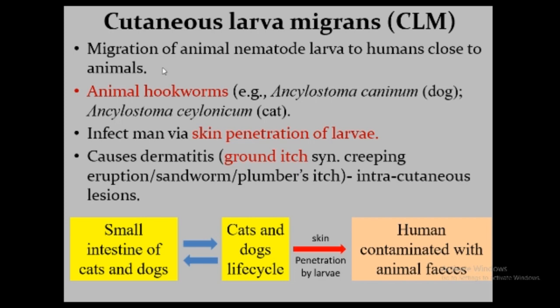Migration of animal nematode larva to humans occurs because of close contact between humans and animals. Animal hookworms are the main agent causing cutaneous larva migrans — the best example being Ancylostoma caninum and Ancylostoma ceylanicum, from dog and cat respectively. Hookworms infect humans through skin penetration of the filariform larva. During penetration of the skin, the larva produces dermatitis. The dermatitis at the site of larval entry has many synonyms: ground itch, creeping eruption, sandworm, or plumber's itch.